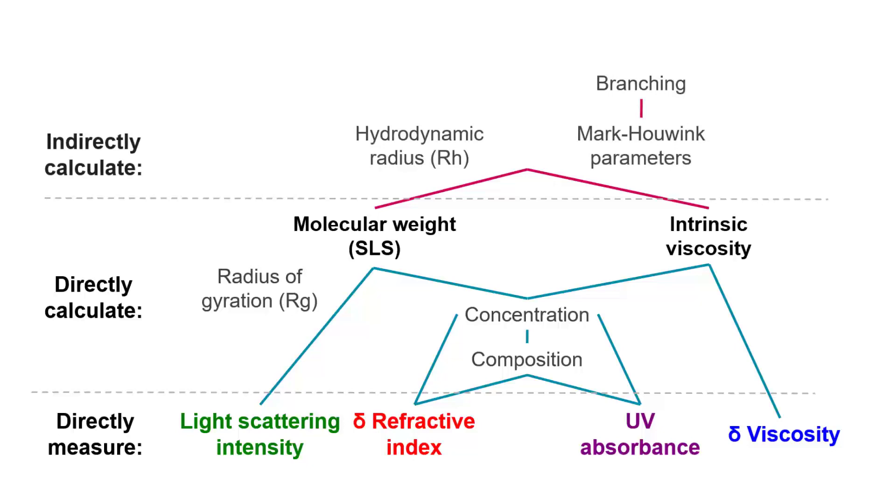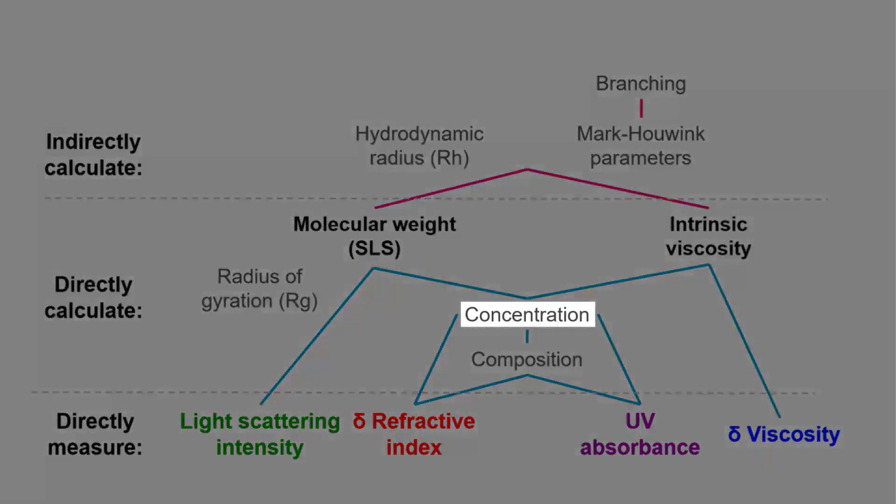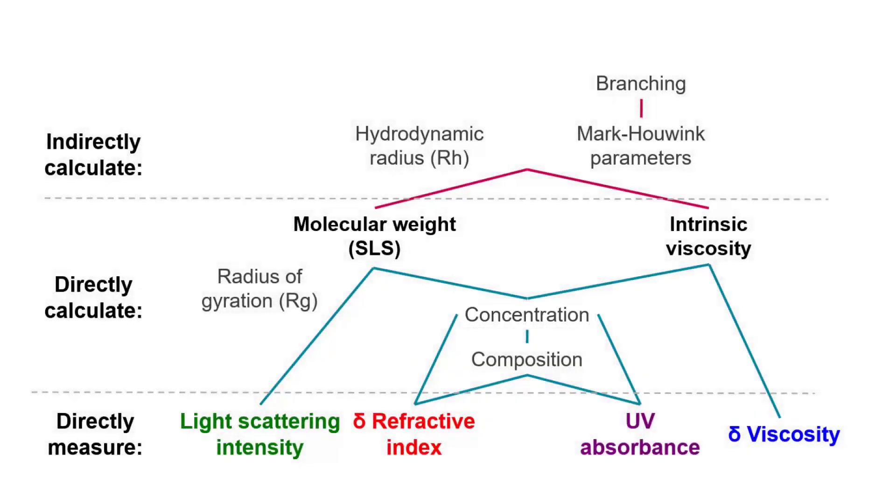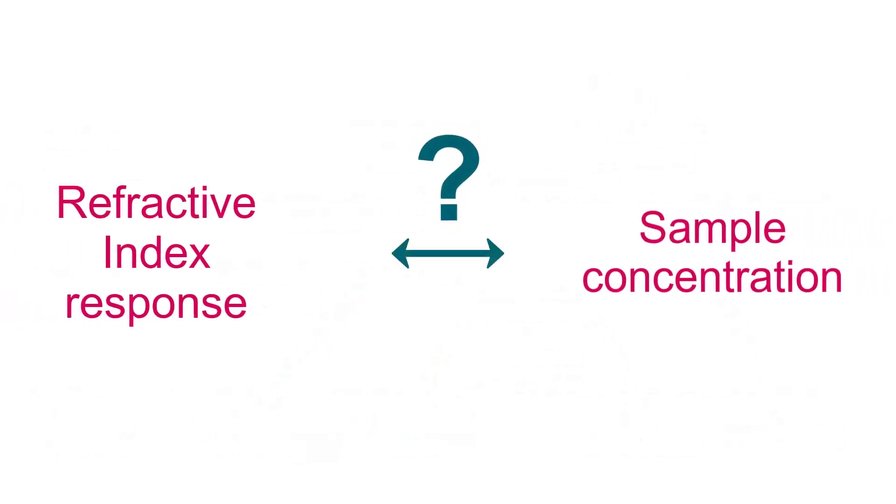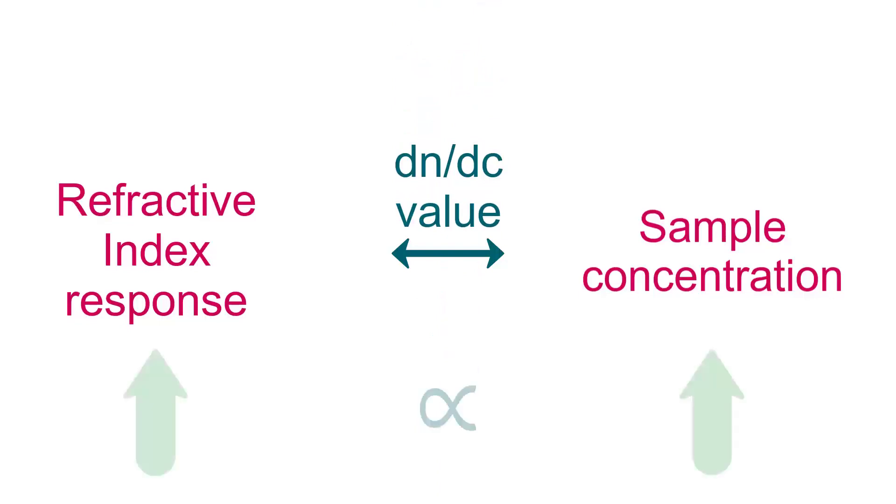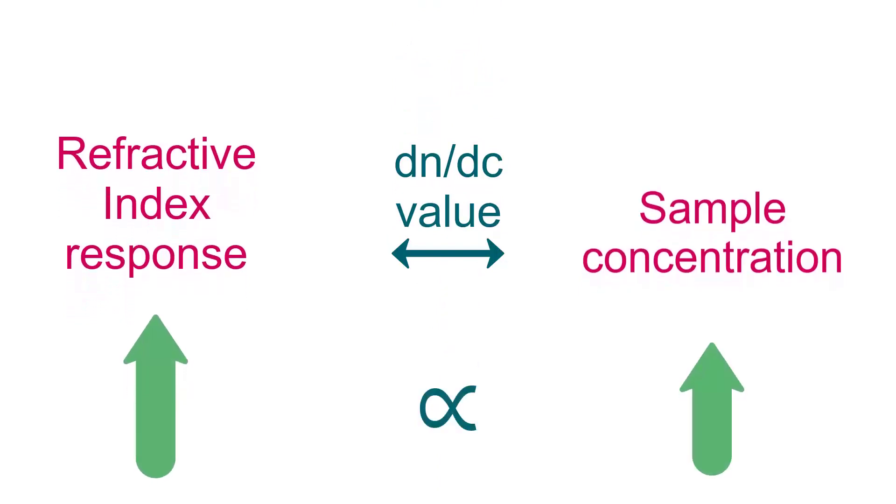These calculations all rely on knowing the concentration of the sample at each data slice. To determine concentration, the observed refractive index response is combined with the sample's DNDC value, which describes the change in refractive index response with respect to change in sample concentration.